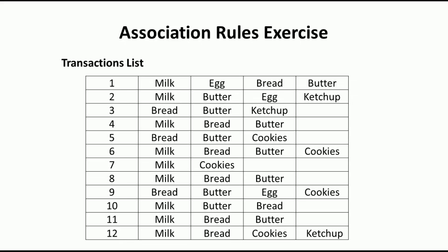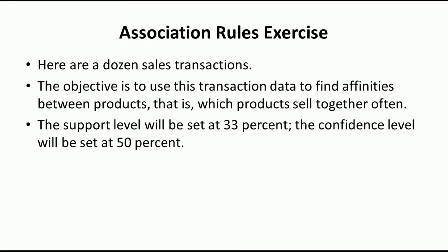The objective of this exercise is to identify the affinities between products — that is, which products will be sold together. The minimum support level is set as 33 percent and the confidence level is set to 50 percent.